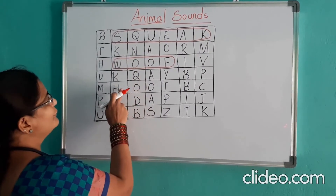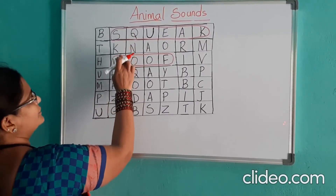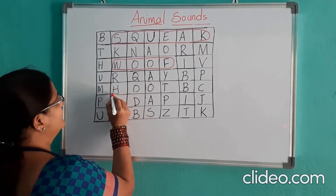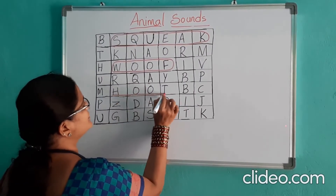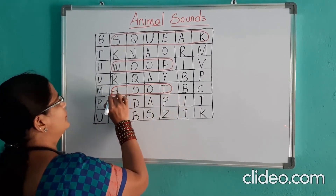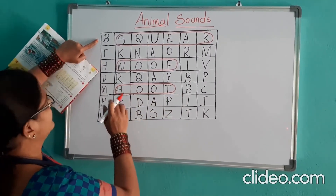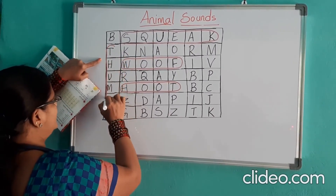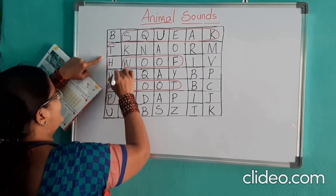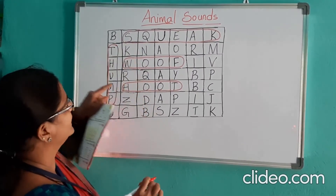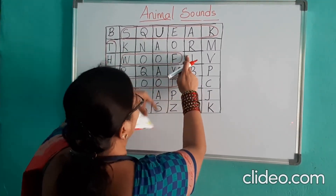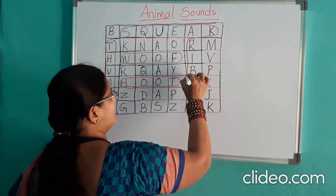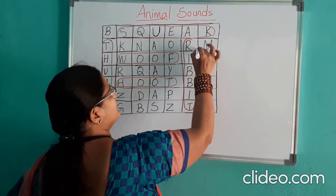Next, coming to the fifth line. One, two, three, four, five. Fifth line. The owl — hoot. H-O. The rabbit — thump. T-H-U-M-P. And next, the frog — ribbit. R-I-B-B-I-T. Ribbit.